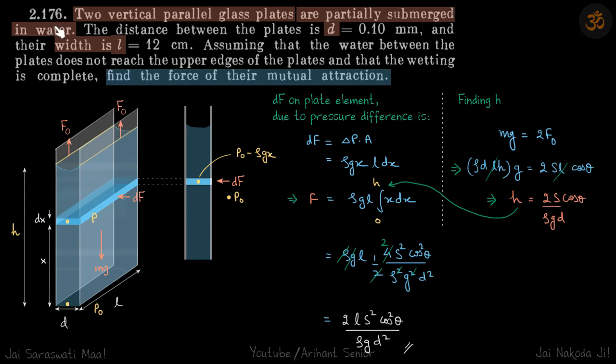In problems 2.174 and 2.175, we also had to find the force of attraction when the water layer was between the two plates, but there the plates were horizontal. Here the plates are vertical.